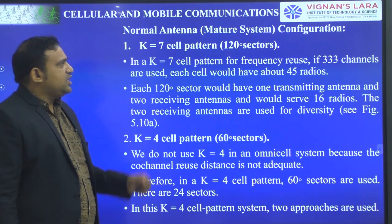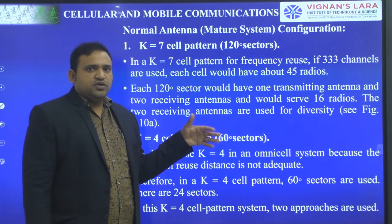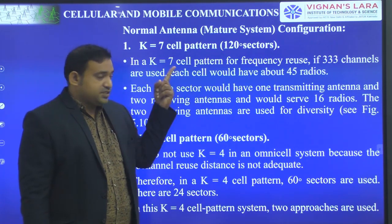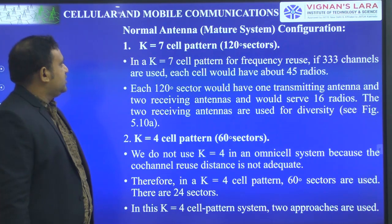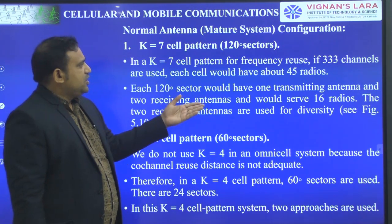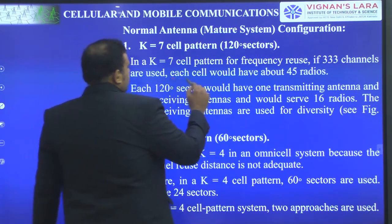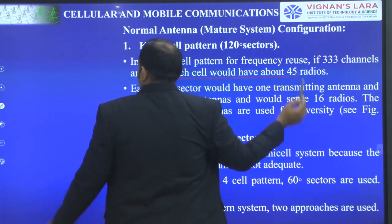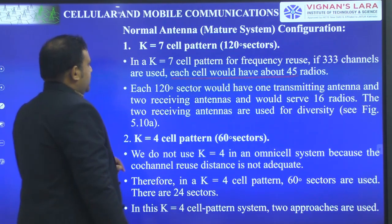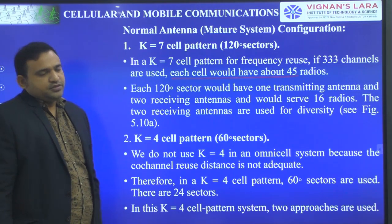For a K equal to 7 cell pattern with a 3-sector, 120-degree sector configuration: if there are 330 channels used, each cell would have about 45 radios. If there are 330 channels, each cell will support 45 radios.